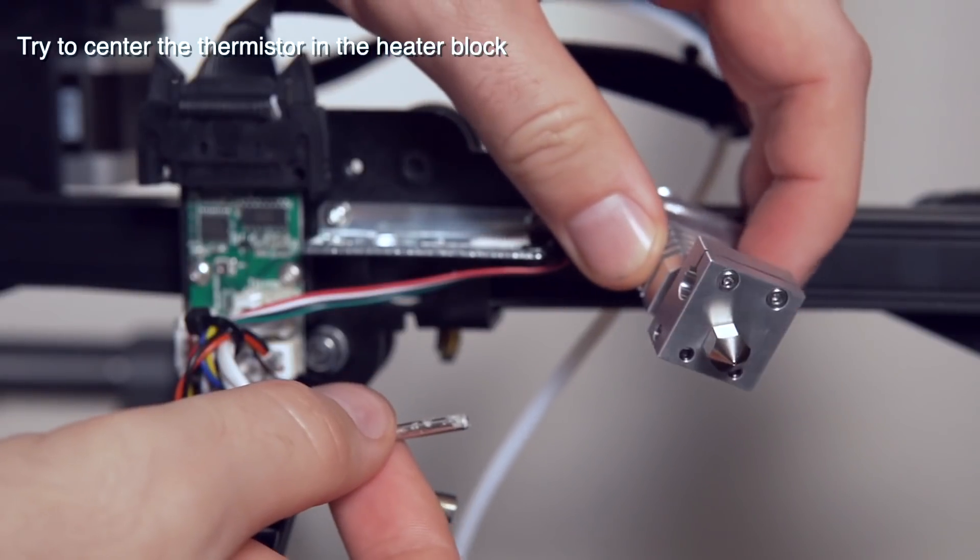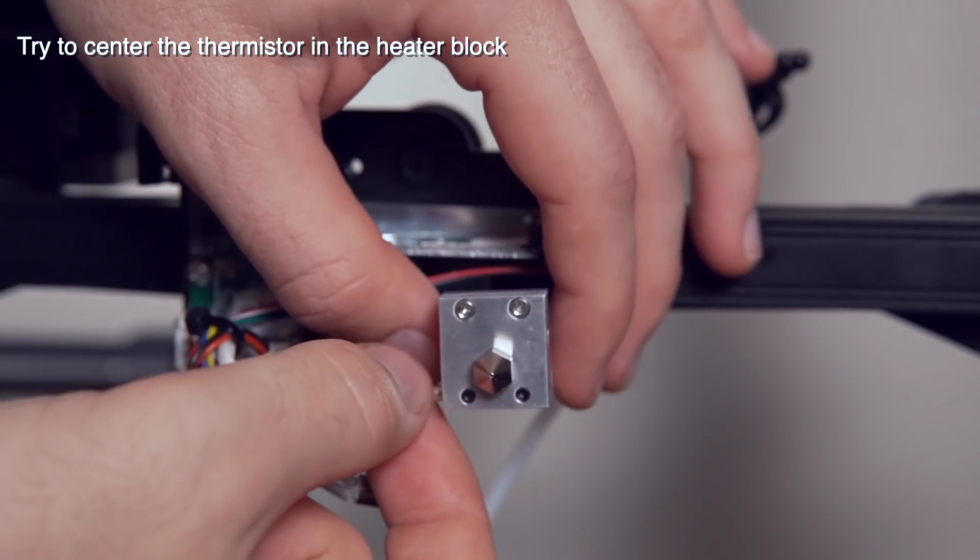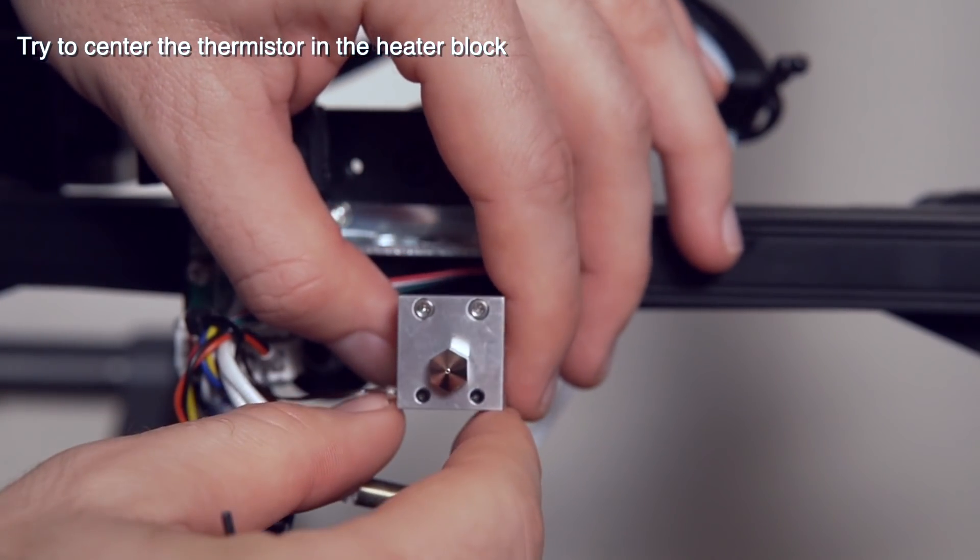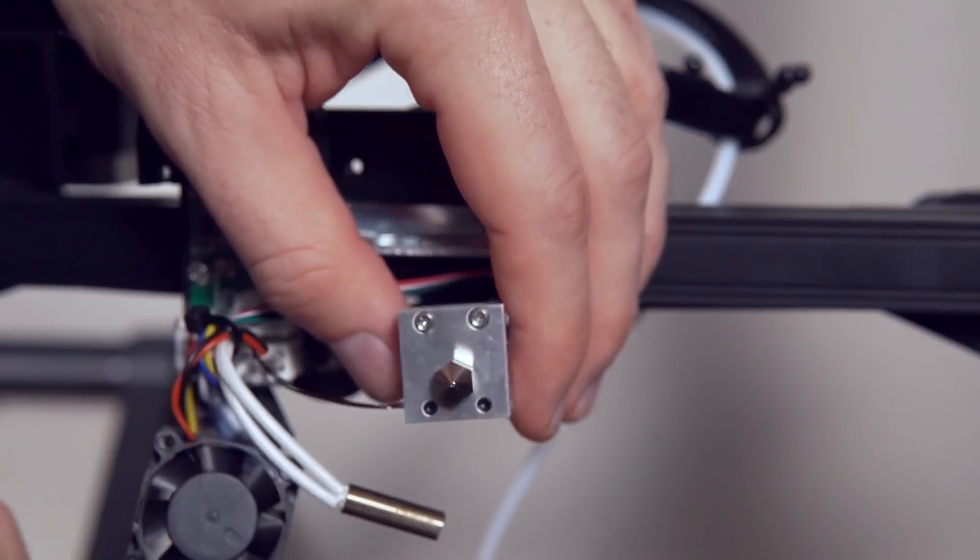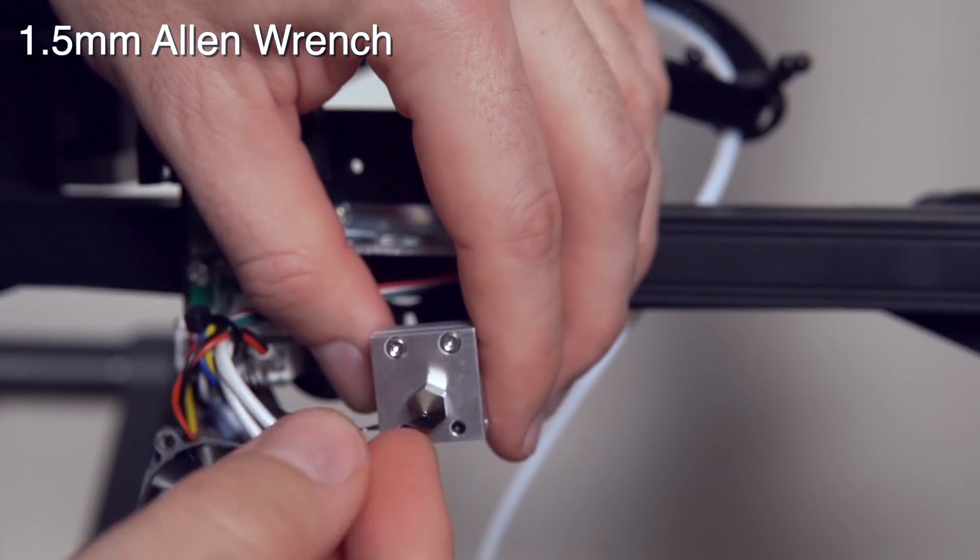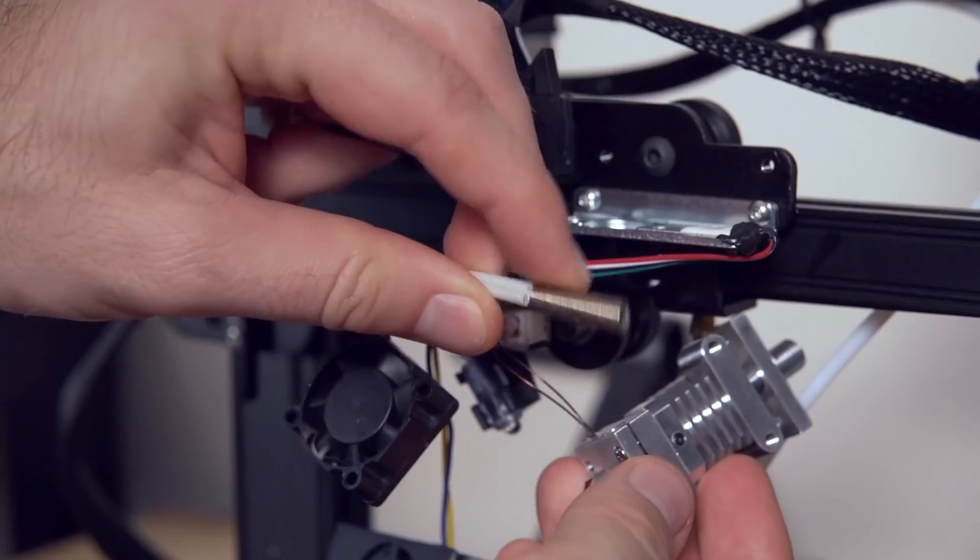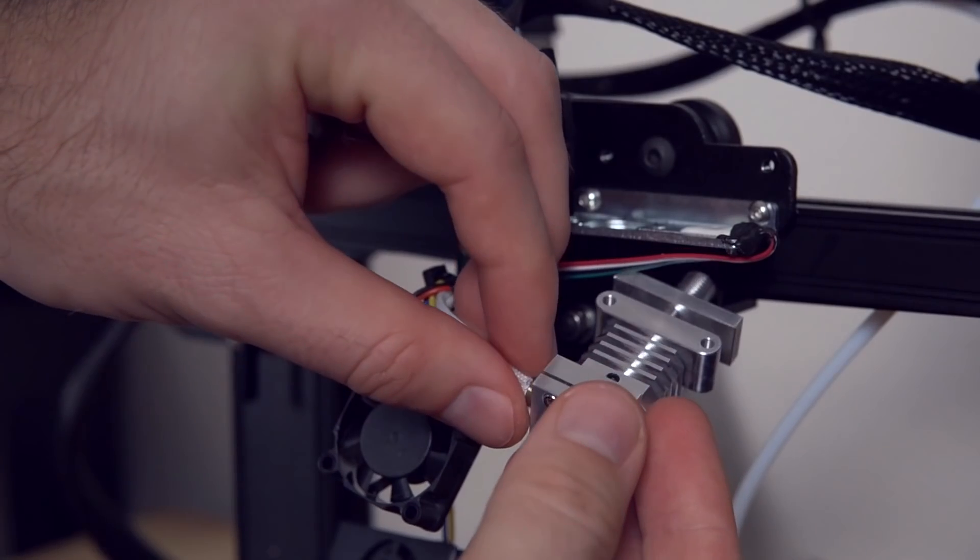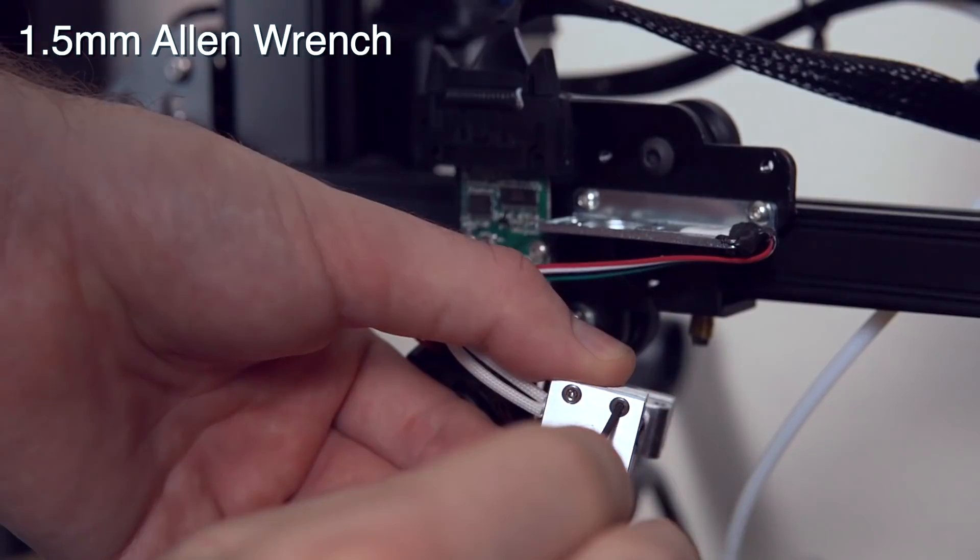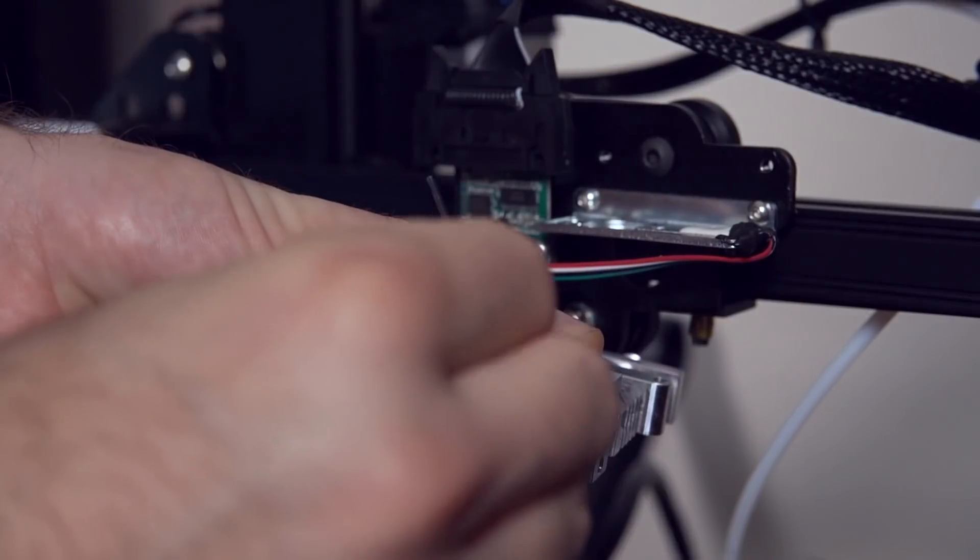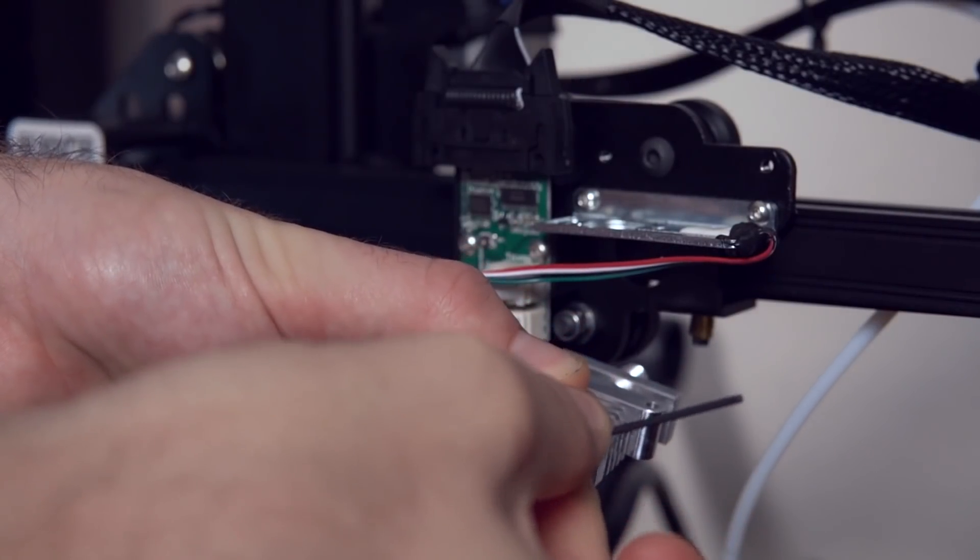Now we're going to reinstall the thermistor and the heater cartridge into this new hotend. I do my best to try and center the thermistor in the heater block so that way both of those grub screws on the bottom will actually clamp down onto the thermistor. So I really just did my best to eyeball it. And then I took the one and a half millimeter Allen wrench and tightened that down onto the thermistor before grabbing the heater cartridge and doing the same thing. I did clamp down a bit harder on the heater cartridge because it's just not nearly as delicate and you certainly don't want the heating cartridge to fall out of your hot end. But again, just hand tightening is going to be more than enough for both of these items.